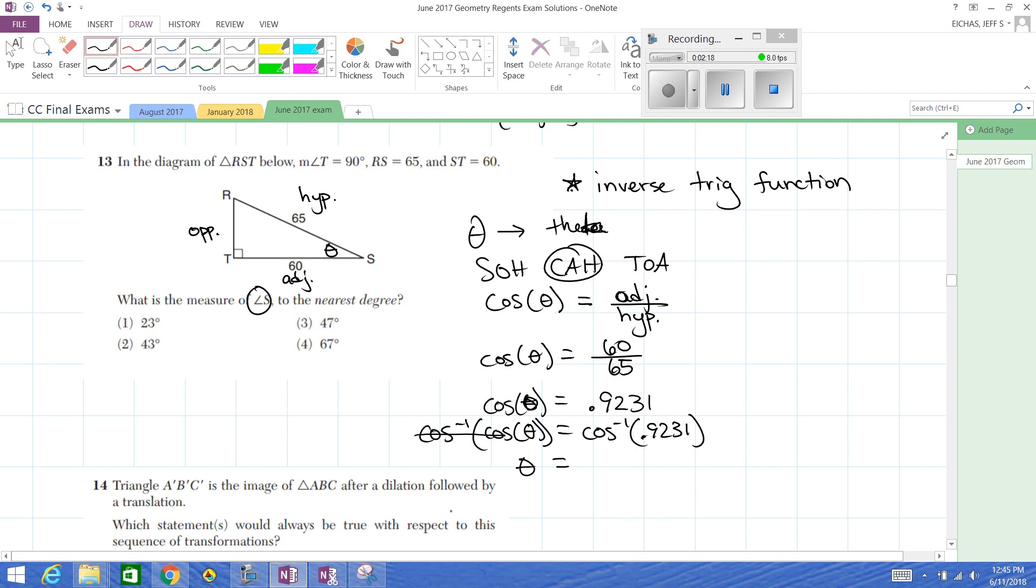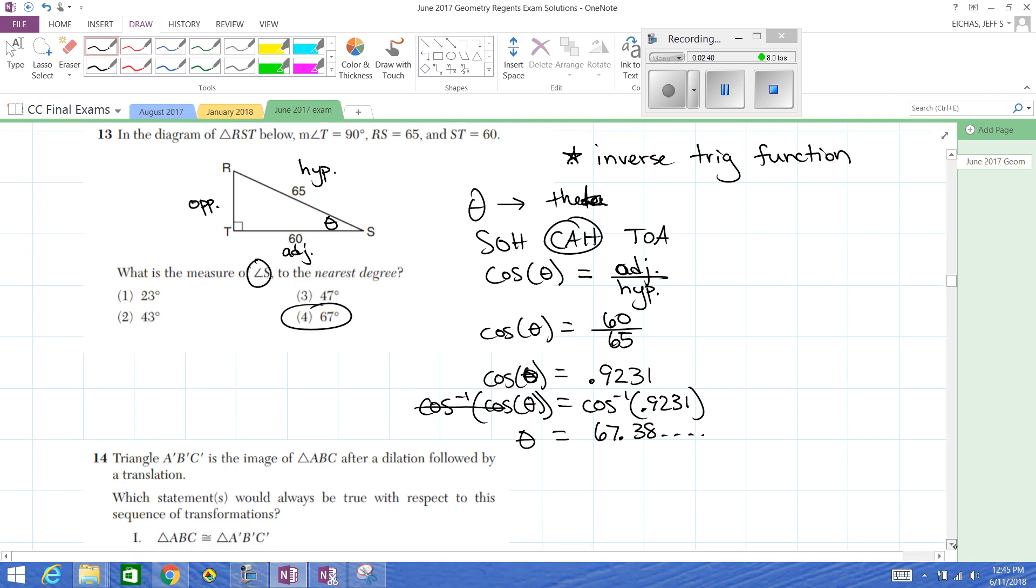So to get rid of cos you perform cos inverse. Of course, whatever you do to one side you have to do to the other. So that's an important process. Let me just get the angle measure. I get 67.38, so that's close to 67 degrees.